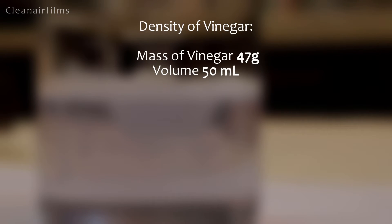First we will calculate the density of the vinegar. We take the mass of the vinegar and divide it by its volume. We get 0.94 grams per milliliter.